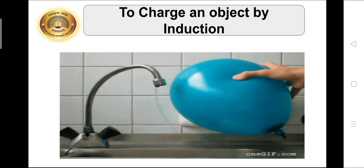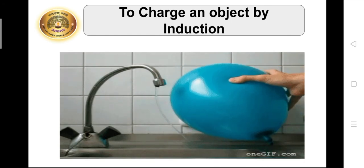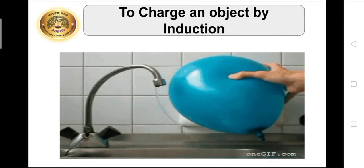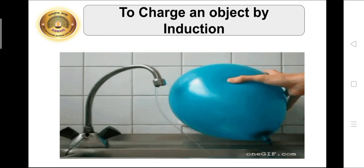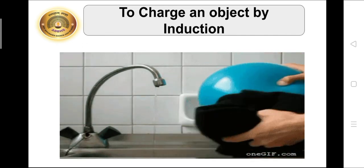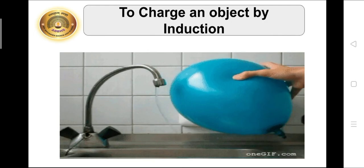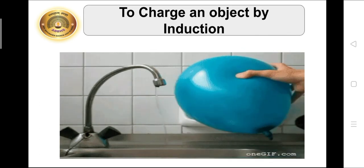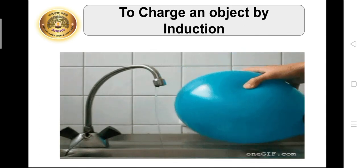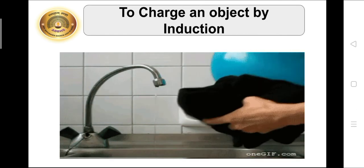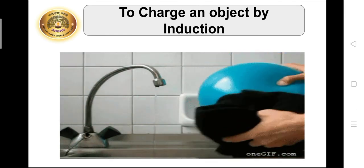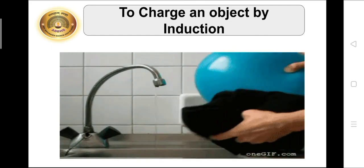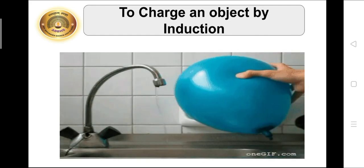Now let's see how to charge an object by induction. When you rub a balloon or a comb against a cloth, it becomes negatively charged. When this negatively charged balloon or comb is brought near to the thin trickle of water from a tap, the water's negative charge moves away from the negative charge of the balloon and that part of water becomes positively charged due to a deficiency of negative charge.